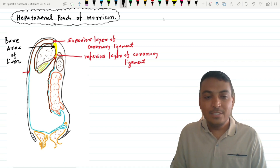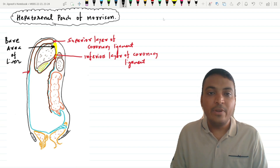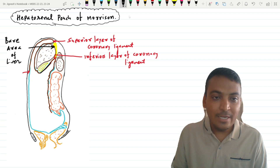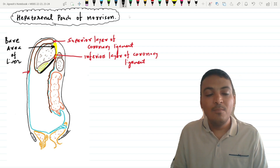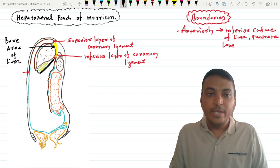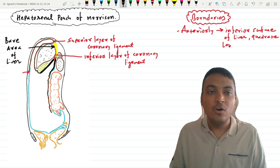Now let's understand the boundaries of the hepatorenal pouch of Morrison. The anterior boundary is formed by the inferior surface of the liver as well as the gallbladder, and the inferior surface of the liver has the quadrate lobe there. Posteriorly, this hepatorenal pouch is bounded by the visceral peritoneum covering the right suprarenal gland, right kidney, and the right colic flexure.